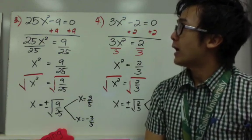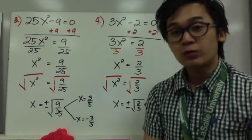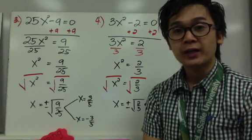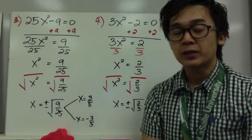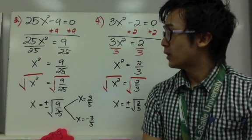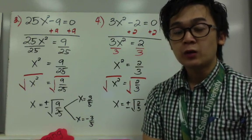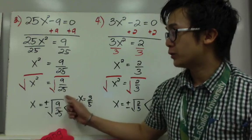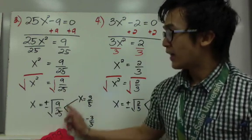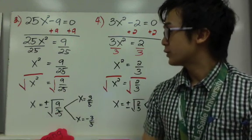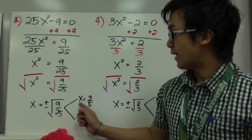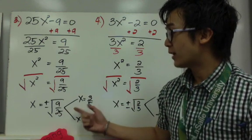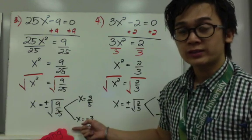For example number 3, we have 25x squared minus 9 equal to 0. We add 9 on both sides to get 25x squared equals 9, then divide both sides by 25 to get x squared equals 9 over 25. Taking the square root of both sides gives x equals plus or minus the square root of 9 over 25. Since 9 and 25 are perfect squares, we take their square roots separately: the square root of 9 is 3 and the square root of 25 is 5. So x equals 3 over 5 and x equals negative 3 over 5.